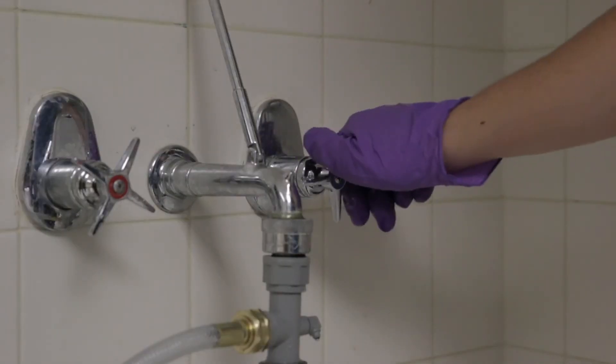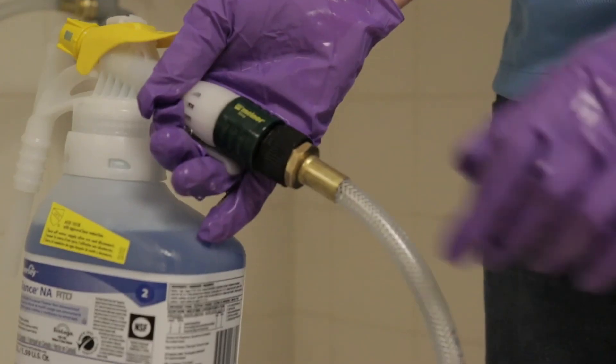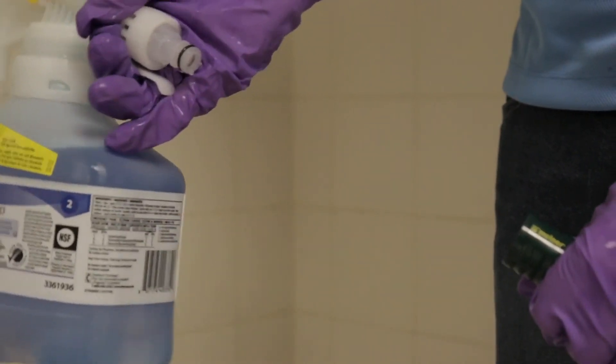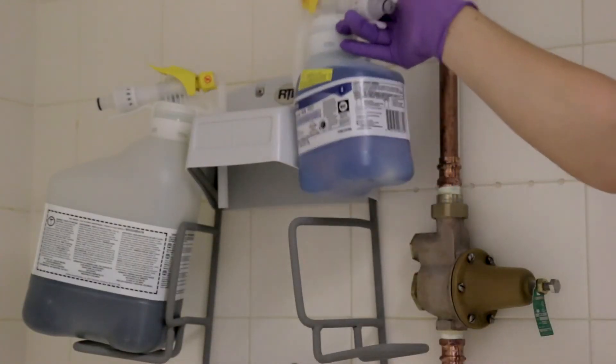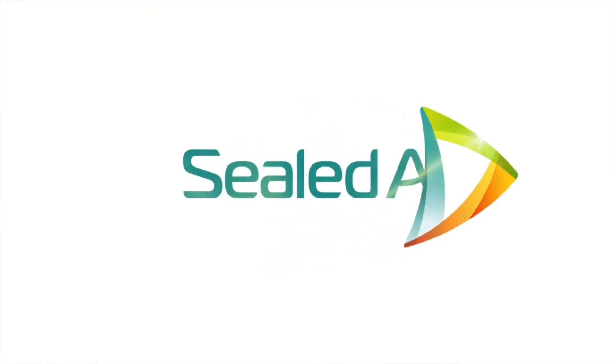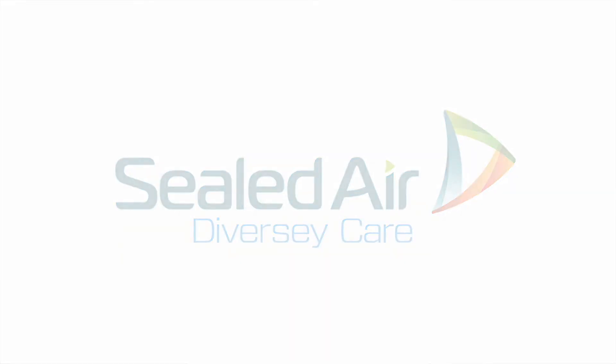After filling your container, turn off the water source and disconnect the RTD unit from the hose. A small amount of clean water will be released from the unit. Store the unit for its next use.